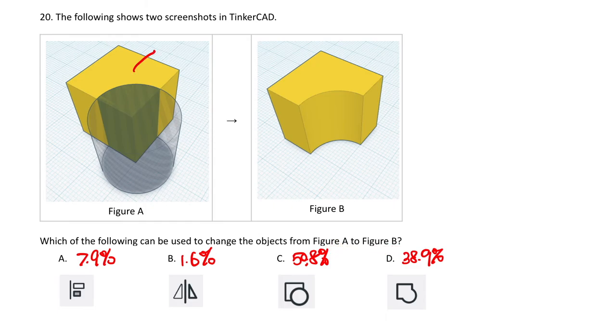In figure A, we have two objects. The first one is an object in the shape of a cube, and the second one is a hole in the shape of a cylinder. In figure B, we can see there is only one object. That means in the process we have grouped the two objects together.